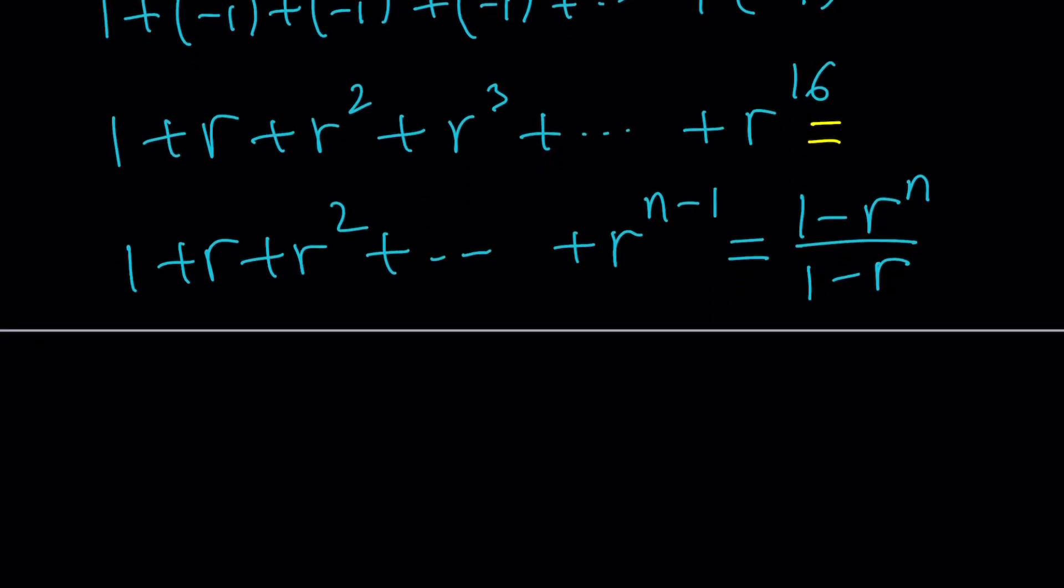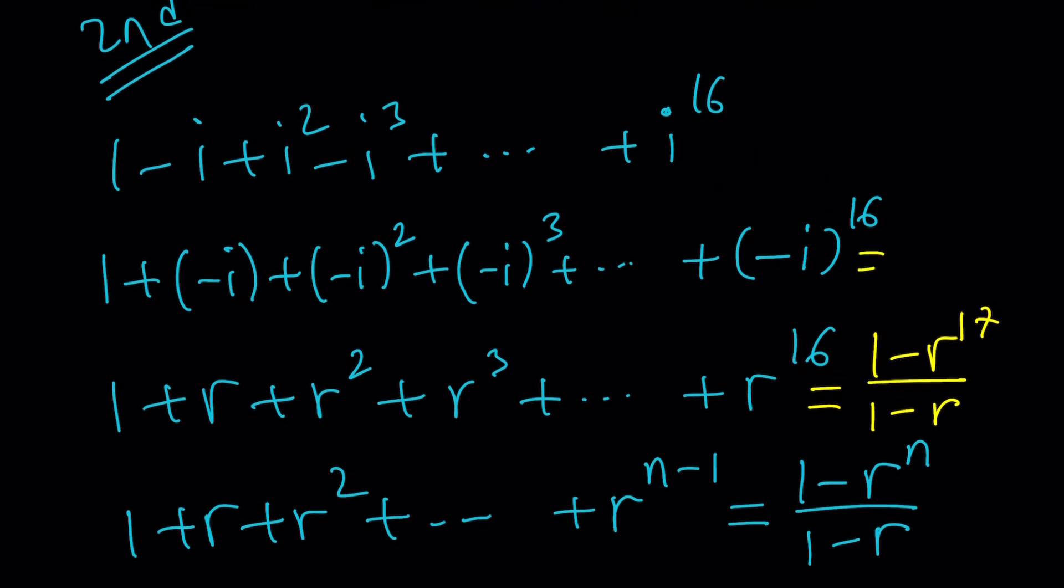And based on this formula, this sum is going to be 1 minus negative i to the 17 over 1 minus negative i. You've got to be careful, R is negative i, not i, so you have to take that into consideration.